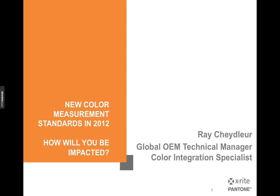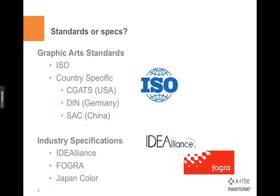Let's start off with what the difference is between standards and specifications. In casual conversation in the printing world, we often talk about standards and specifications as if they were the same thing. But in general, standards are set either at the international level — which is the ISO — or set at the national level. Industry specifications generally follow the standards, and they may be regional or more widespread. Standards have one role, and specifications then essentially focus those standards into a very industry-specific use.